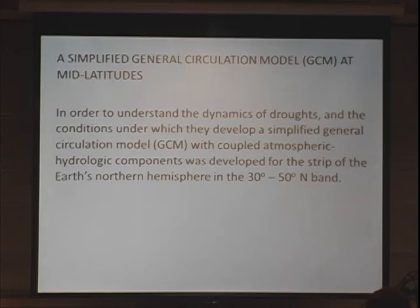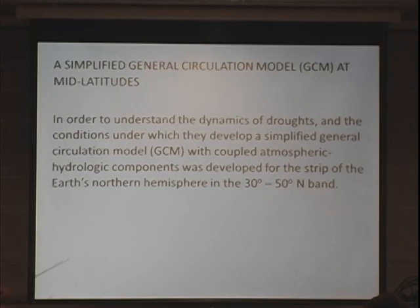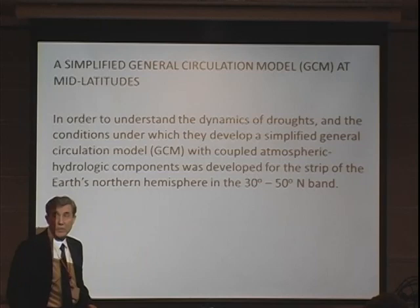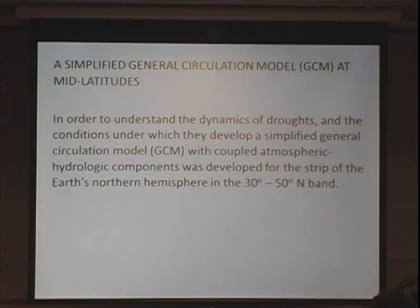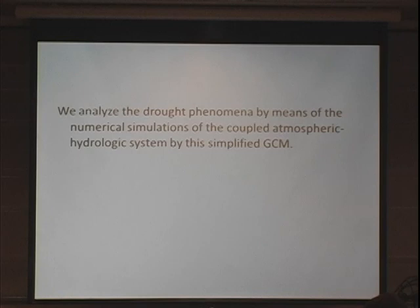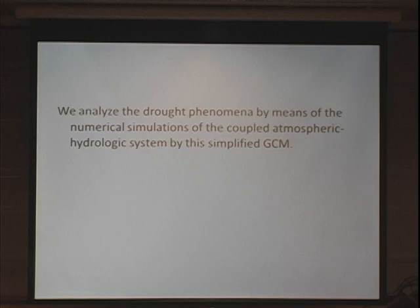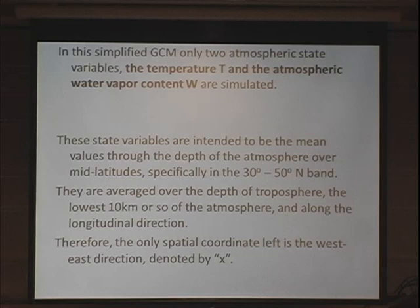I will be discussing a simplified general circulation model at mid-latitudes, considering only the Earth's northern hemisphere in the 30 to 50 degrees north band. The reason for this simplified model is to be able to run many numerical simulations of the coupled atmospheric-hydrologic system, versus comprehensive GCMs where it is difficult to generate an ensemble of simulations.